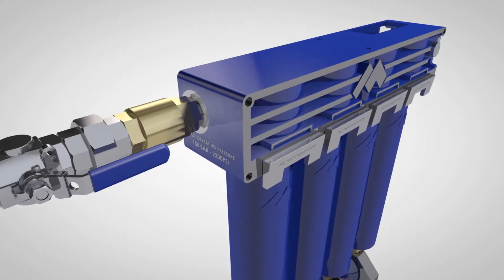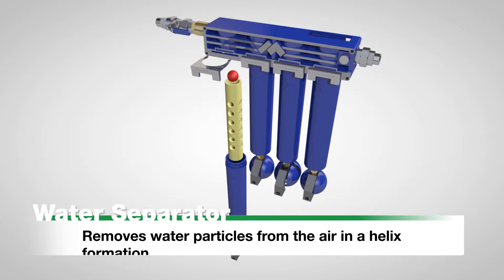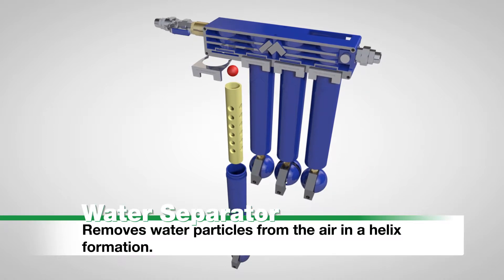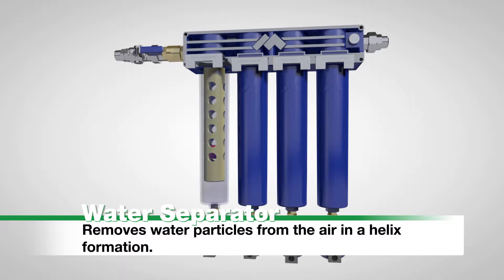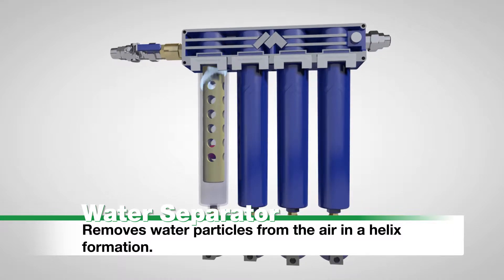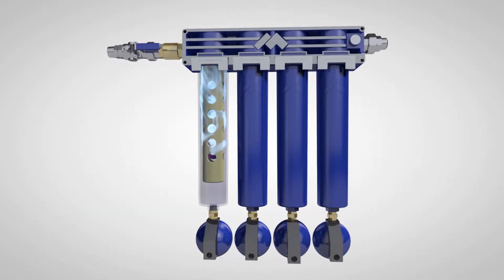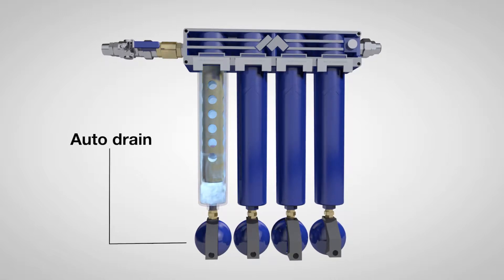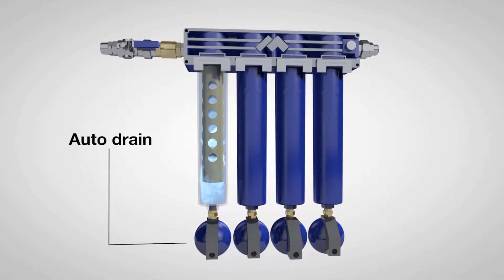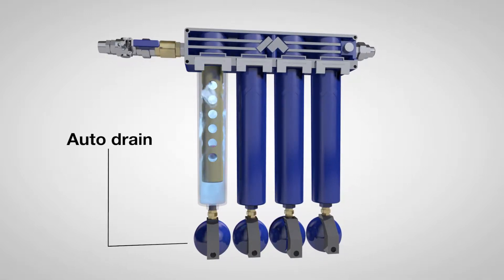The first stage of filtration is water separation. The filter directs the flow of compressed air in a helix formation, separating water particles from the air. Excess water is collected in the auto-drain where it is automatically pressurized and purged based on water head levels.